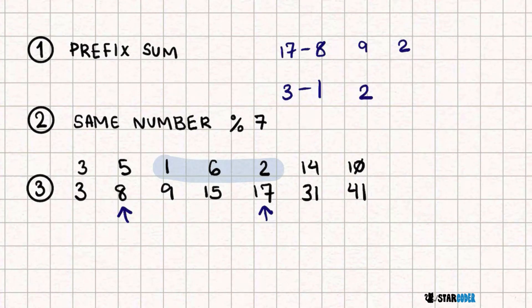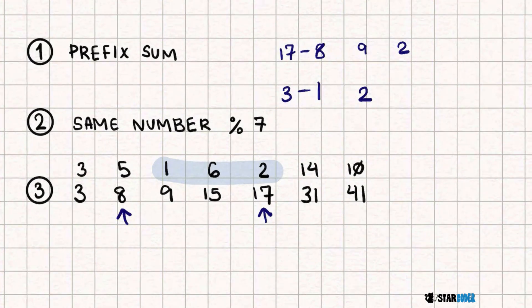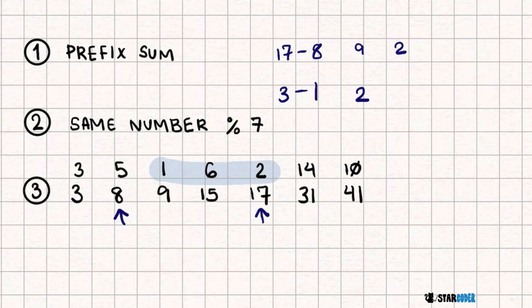So what we can notice is that first, we don't have to store this array. We can instead, for our prefix sum, store the values mod 7. So we can actually replace this array with the values mod 7. So this becomes 3, 1, 2, 1, 3, etc.